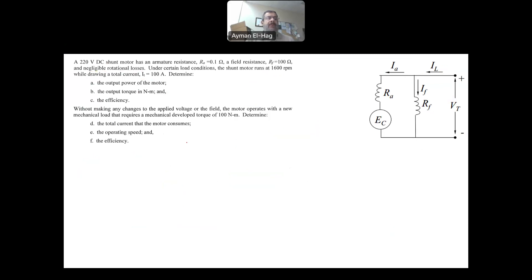Now, let's go to the second part. Now, the first part is typical. At certain conditions, what are these values? You can ask for different things. But now, in the second part, we are making a change now from the previous case. Now, here it says the change without making any change to the applied voltage or the field. So I'm not changing VT or I'm not changing RF. They are constant. So basically, my IF is constant, doesn't change.